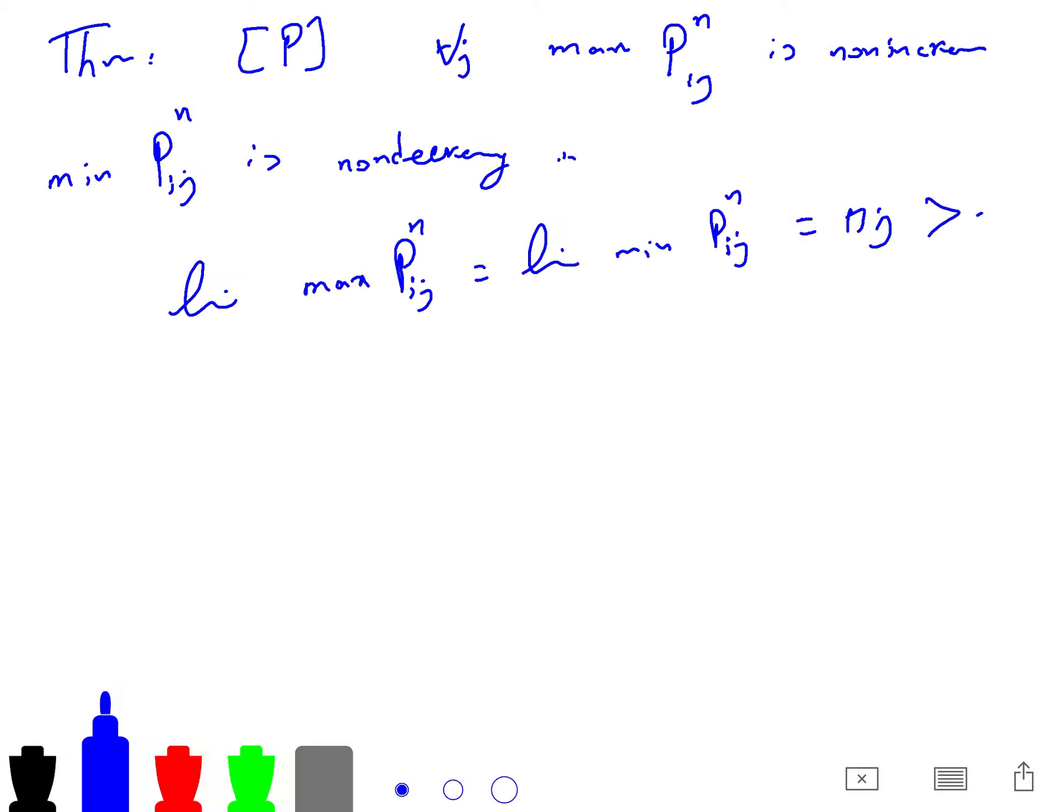And the limit of maximum pij to the n is just the limit of minimum of pij to the n. So this is a very elementary theorem. And so this lim max is lim min. So it converges to pi j with exponential convergence in n.